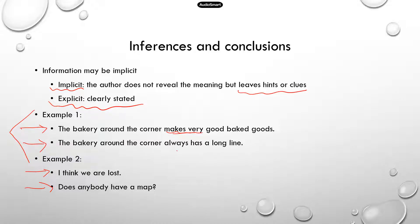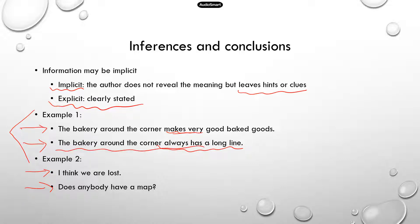The implicit version: "The bakery around the corner always has a long line." This implies that there are always a lot of people going to the bakery to buy stuff, which implies that their food must be pretty good. So you can see there are really two ways to express the same idea, and a lot of times authors would use the implicit way. For the second example: "I think we're lost" is explicit. But "Does anybody have a map?" implies that directions are needed because the person is asking for a map.